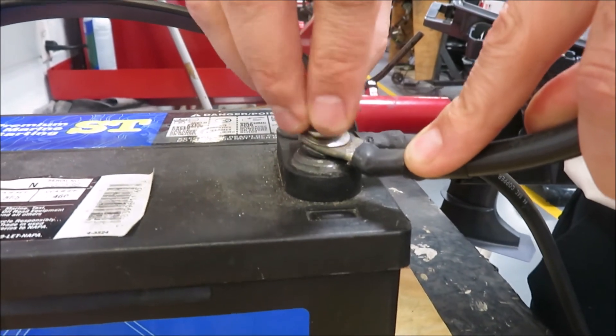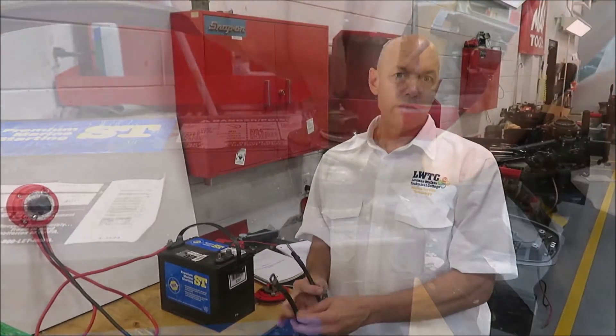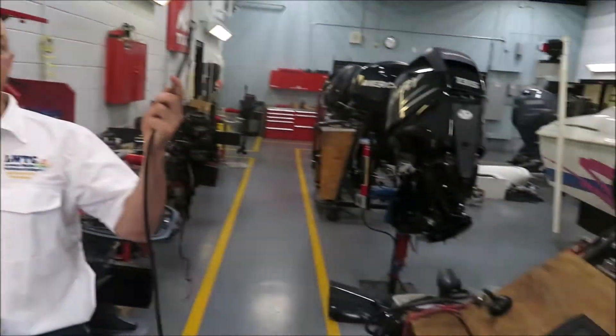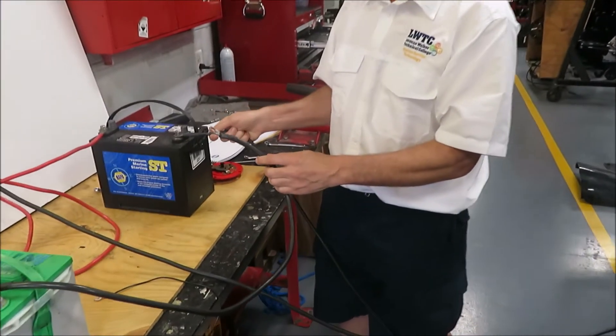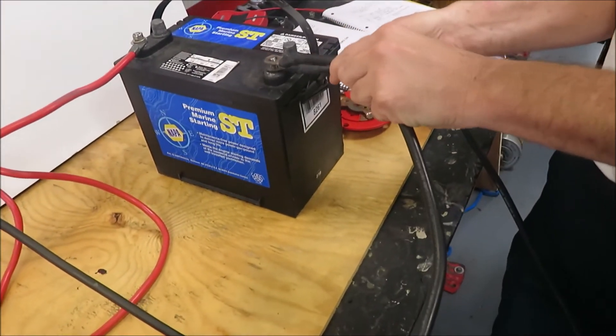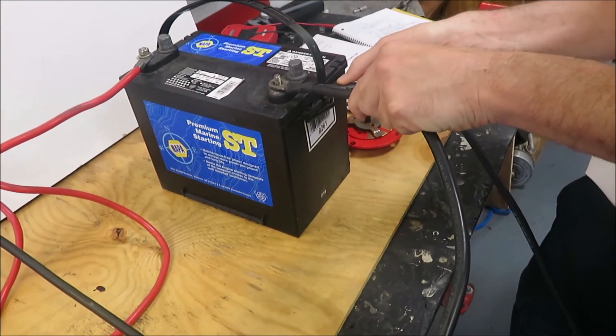So the remaining thing to do is hook up your negative lead from the engine itself. Because this is going to be drawing the most current, we'll go on the bottom. And now we're going to attach on the top.